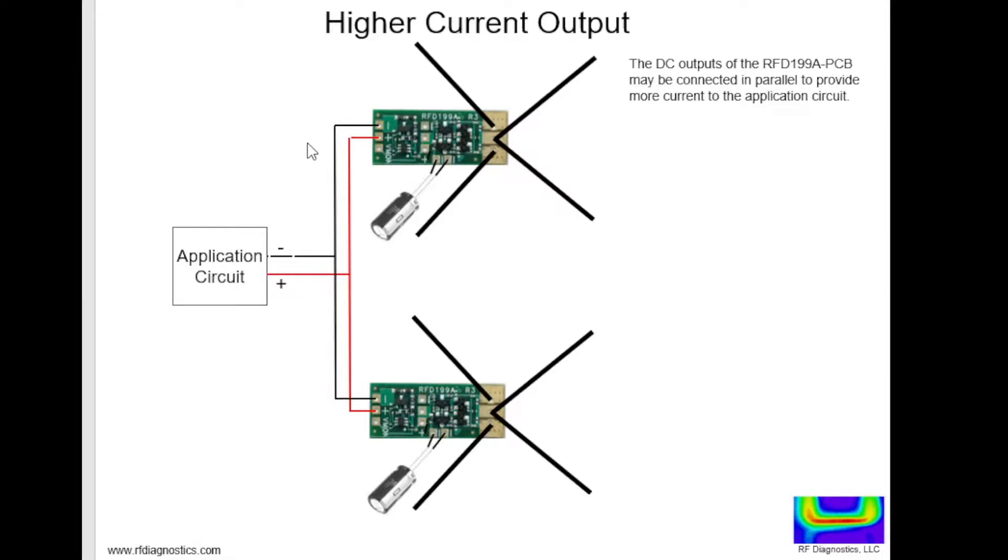One thing you can do is daisy chain or connect in parallel the RFD199A with another one. The outputs can be tied together because we have a voltage sensitive switch. The circuits are now isolated from each other, and one unit can discharge while the other charges or is in a lower power state.